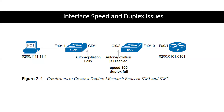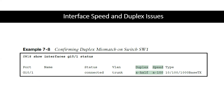Imagine Switch 2's GigabitEthernet 0/2 interface is configured with 'speed 100' and 'duplex full.' This disables IEEE auto-negotiation. If Switch 1's GigabitEthernet 0/1 tries to use auto-negotiation, it would sense the speed as 100 Mbps, but based on the IEEE default rule it would set duplex to half. So one side is full duplex and the other is half duplex — it's going to fail.